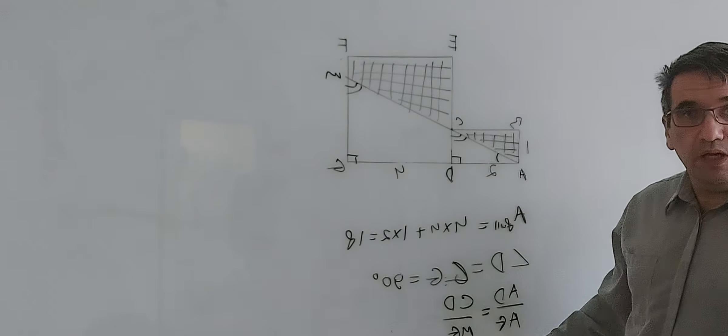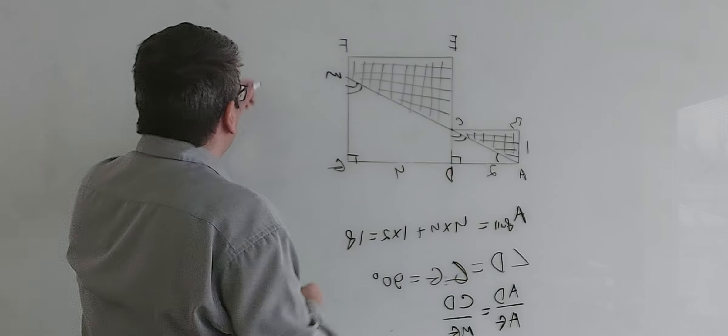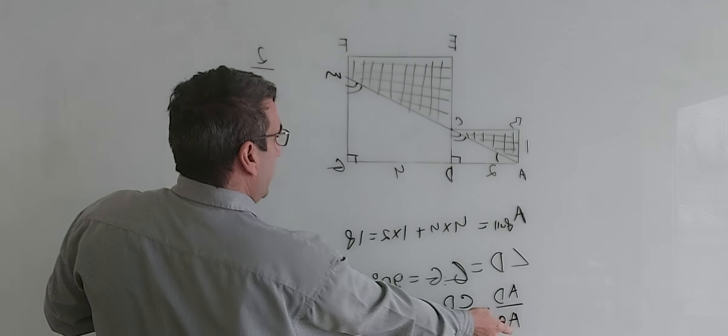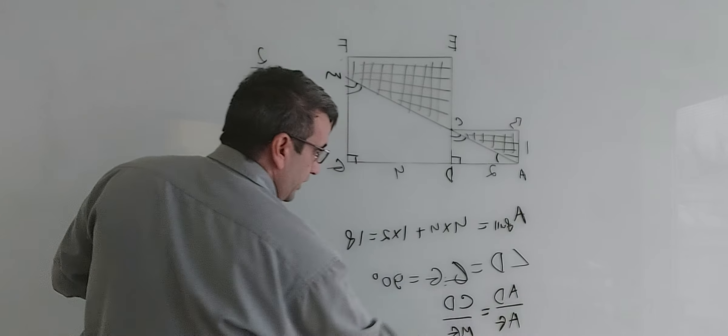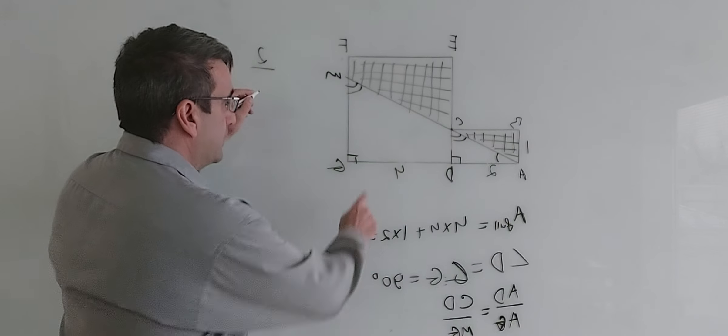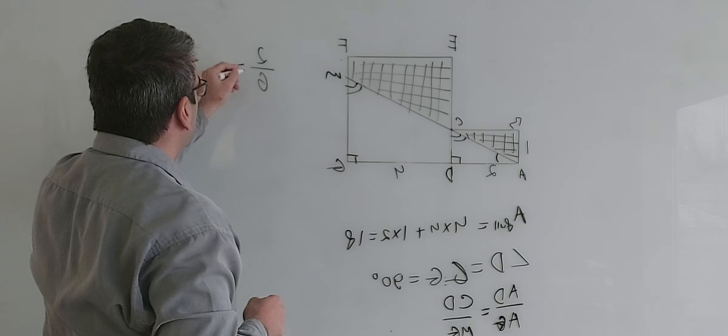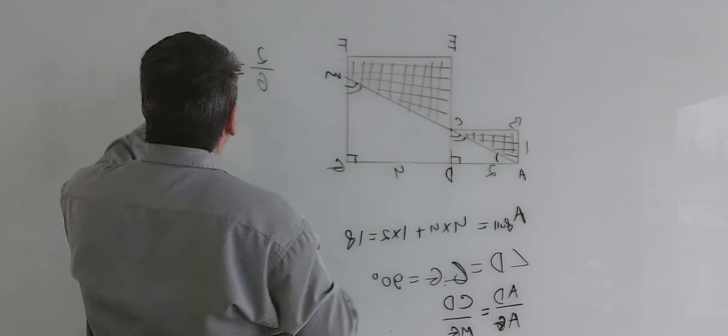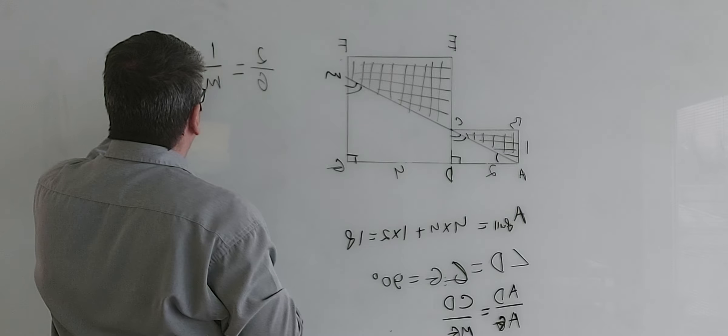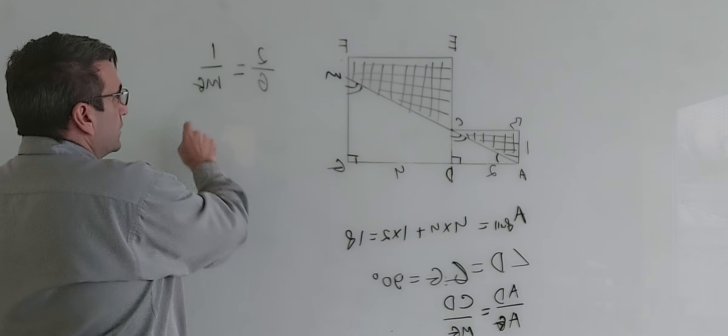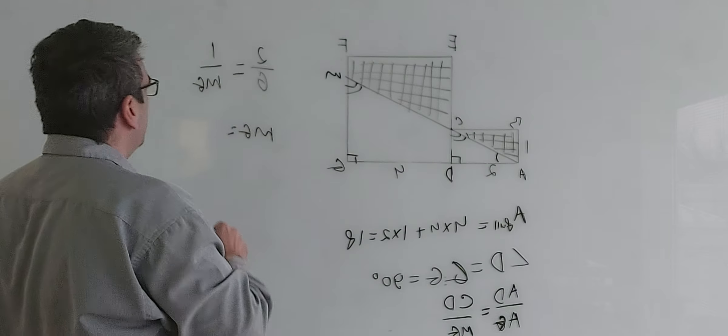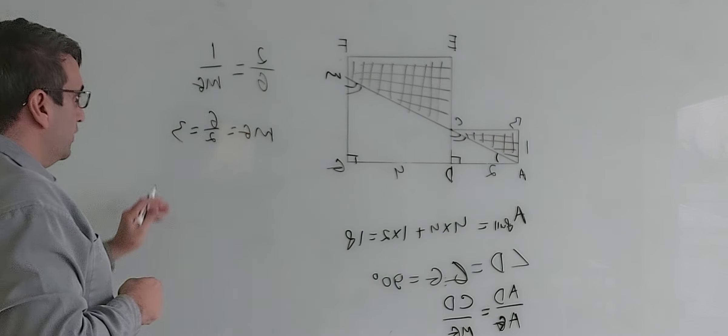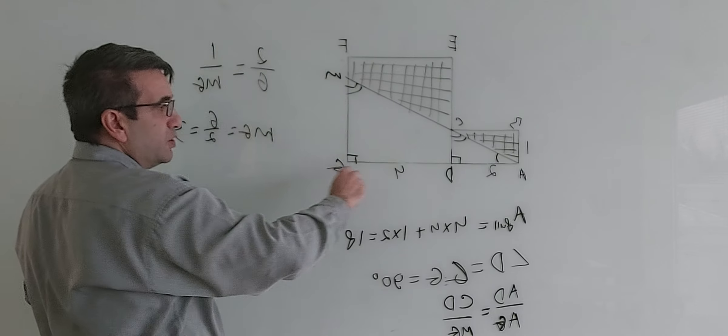So AD is 2, AG is 4 plus 2 which is 6, and this equals CD which is 1 over MG. So from here, MG equals 6 over 2 equals 3. So now we know MG, so we can find the white area.